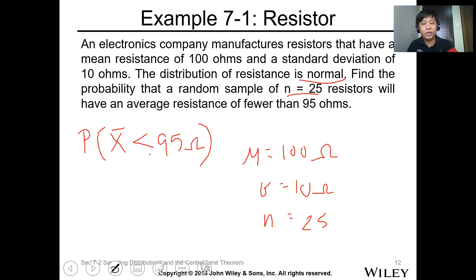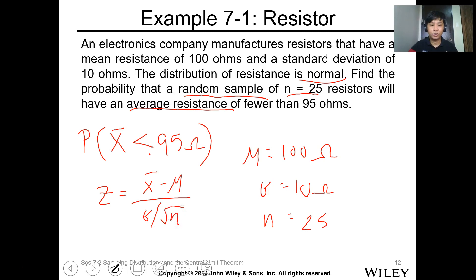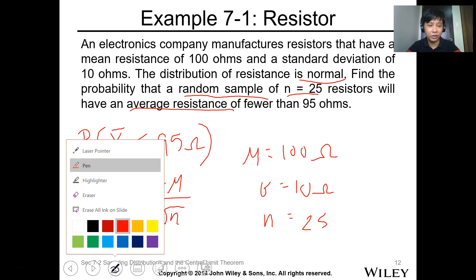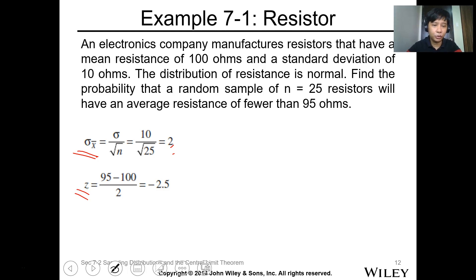Because this is an average resistance for the sample, the formula we'll use is z equals x-bar minus mu over sigma over square root of n. So the sigma x for the sample is 10 over square root of 25, which is 2. Getting the z-value: 95 minus 100 over 2, which is equal to negative 2.5.